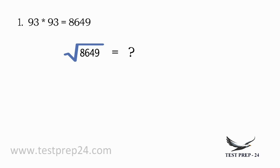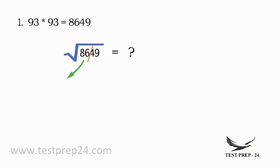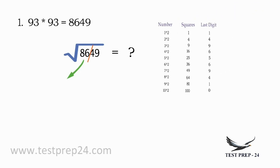Whenever you are trying to find a square root, you draw a line after two digits from the right. This divides 8649 into two parts: 86 as your first part and 49 as your second part. Now, 86 lies between 81 and 100 — that is, between 9 square and 10 square. So based on this, the first digit of the answer is 9.